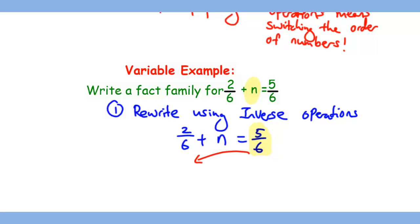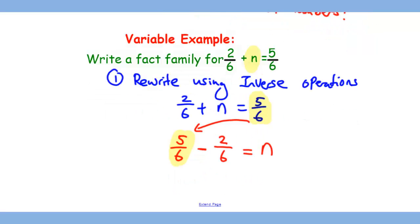You can write this using the inverse operation, which is switching the order of the numbers: 5/6 - 2/6 = n. This should become a lot easier to solve. We have the same denominator, so all we need to do is subtract the numerators, which gives us 3/6 as our final answer for n.